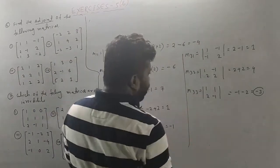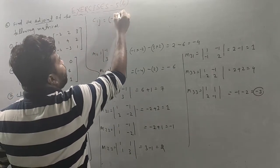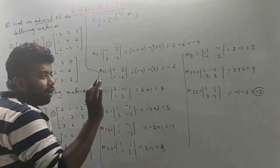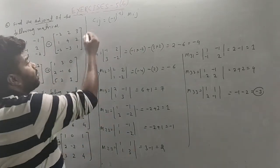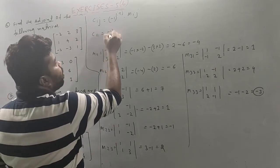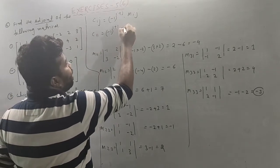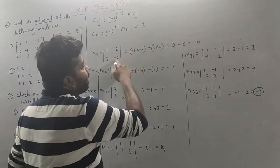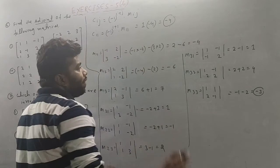I have confirmed the cofactor. The cofactor formula is: C(i,j) = (-1)^(i+j) × M(i,j). So for C(1,1): I is 1, J is 1, so minus 1 to the power of 1 plus 1, that is 1 into M(1,1). M(1,1) is minus 4, so C(1,1) is minus 4. These are the cofactor values using the current formula.